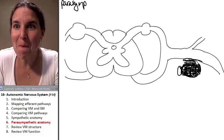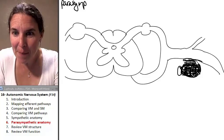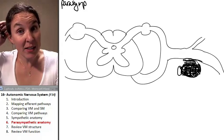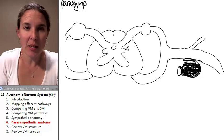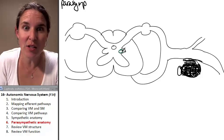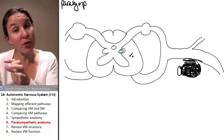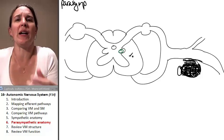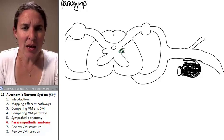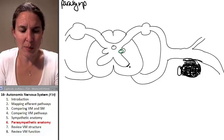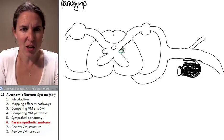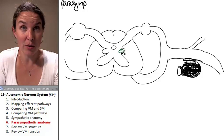So if we were going to map this, map our dark green pathway, where is our preganglionic cell body? Same place as all of our other visceral motor. It's in either the lateral gray horn or the lateral arena. I think technically in the sacral spinal cord, they don't call it a lateral gray horn, but they do have a lateral gray area.